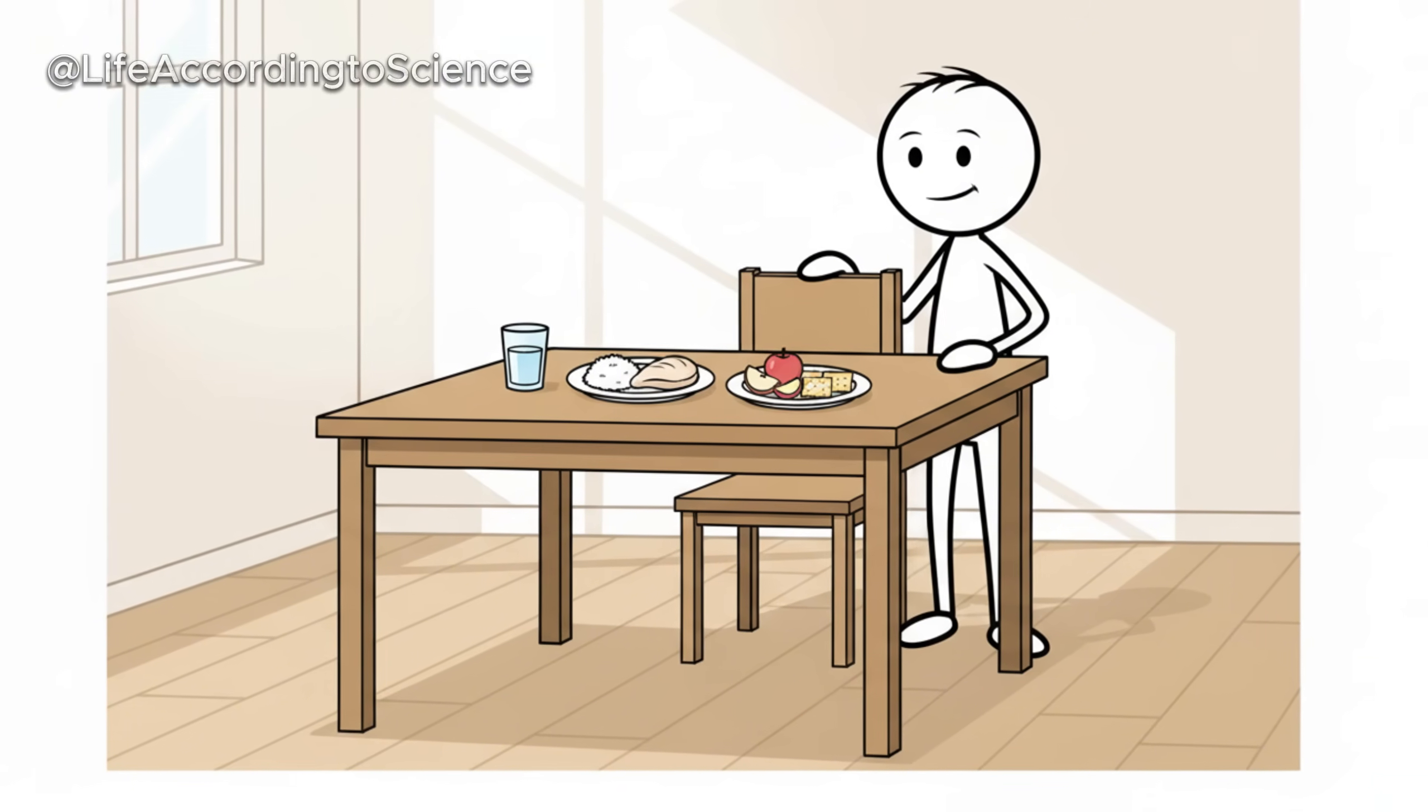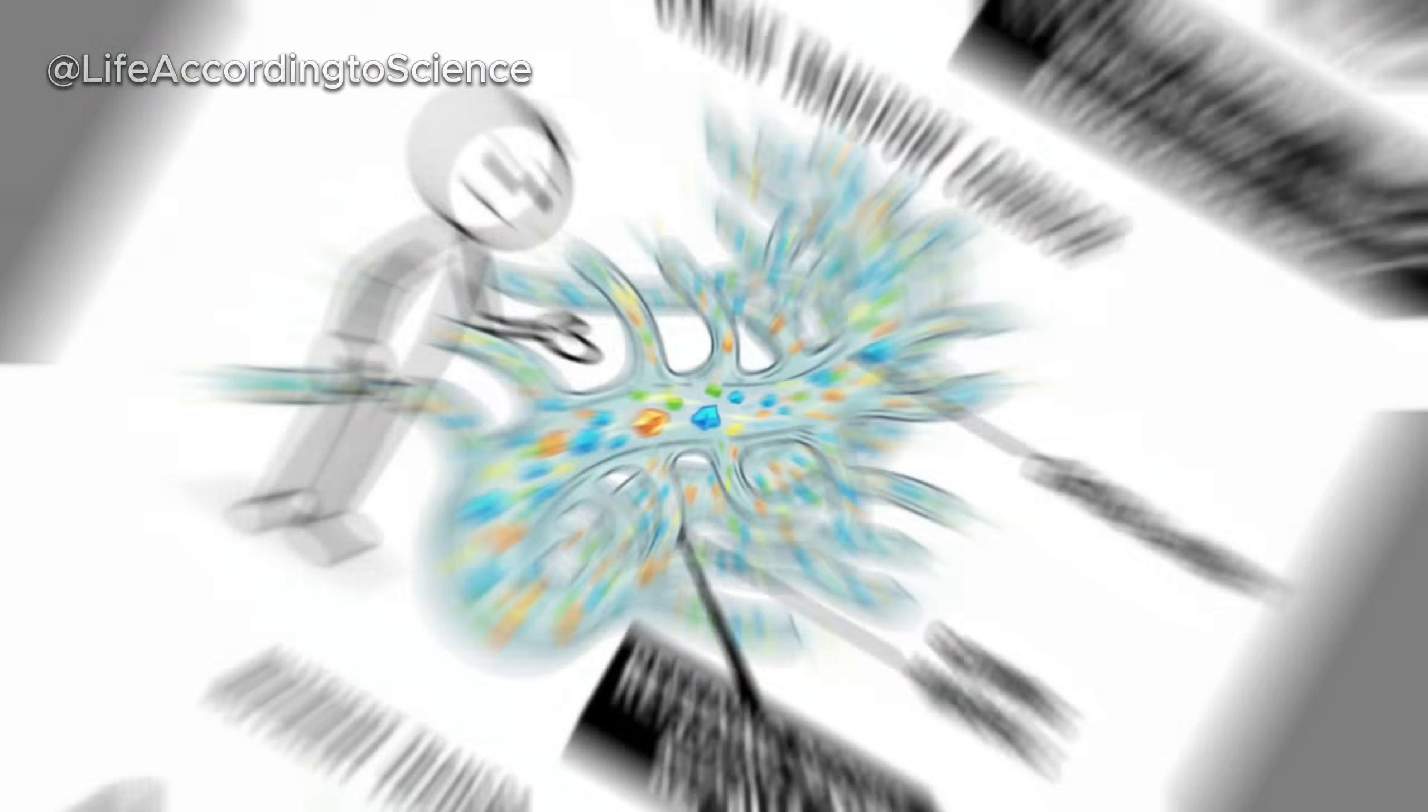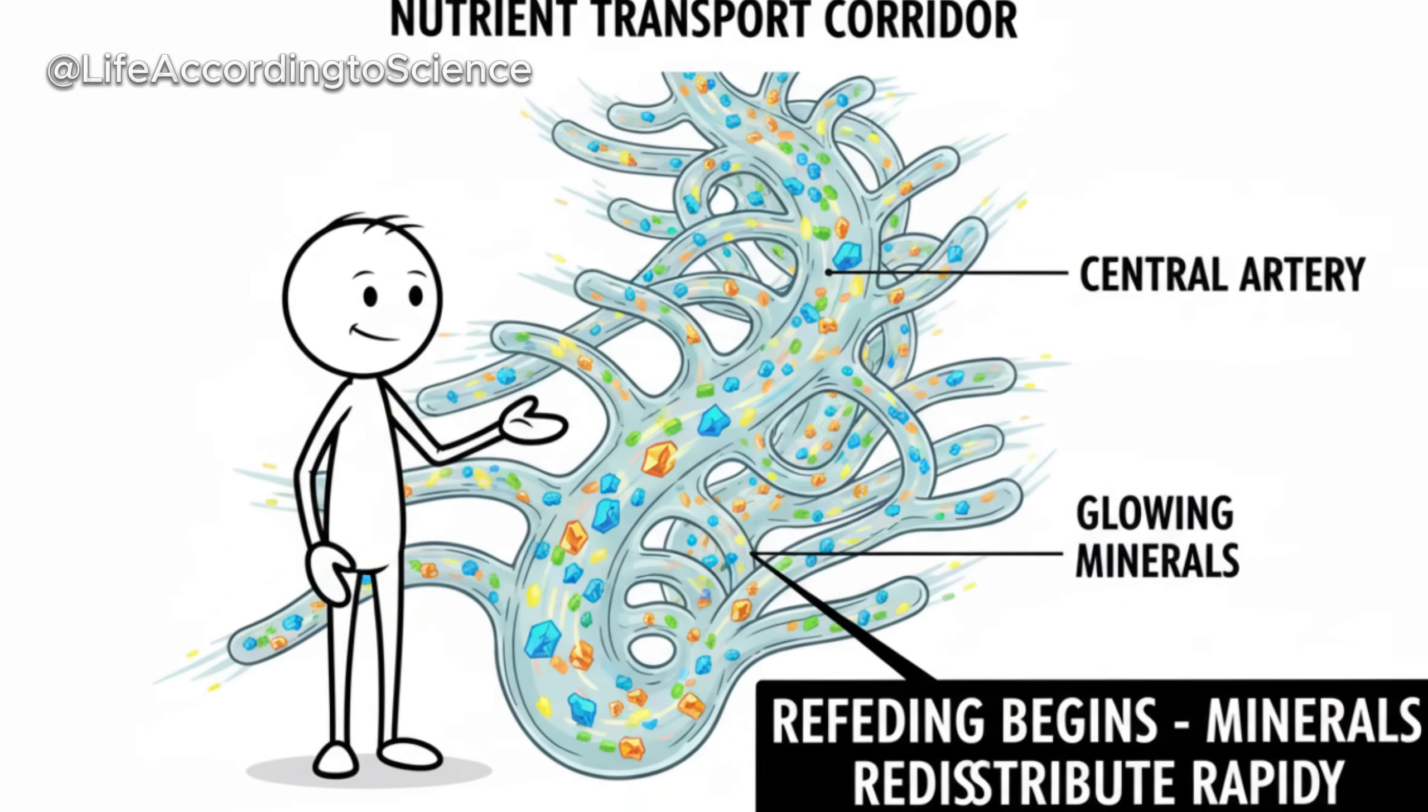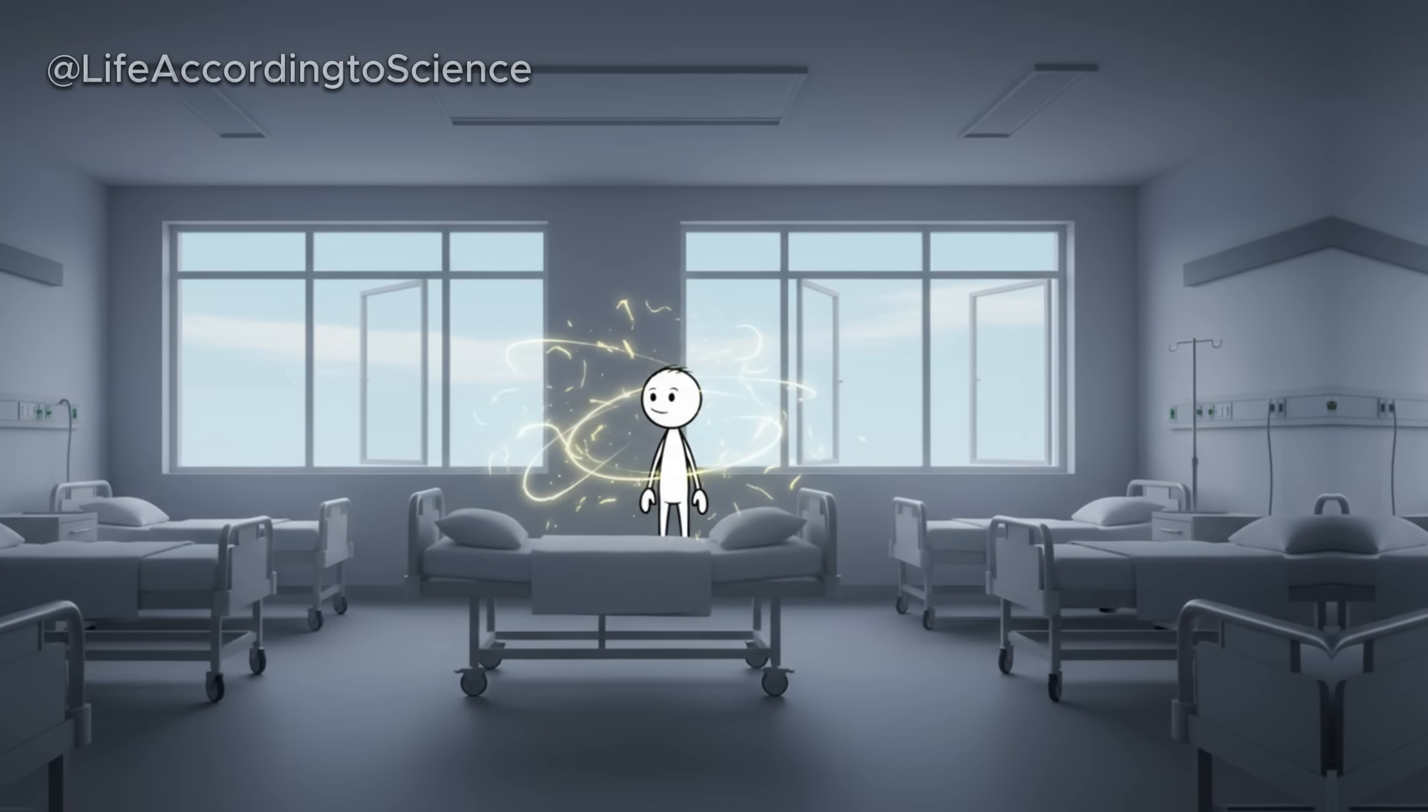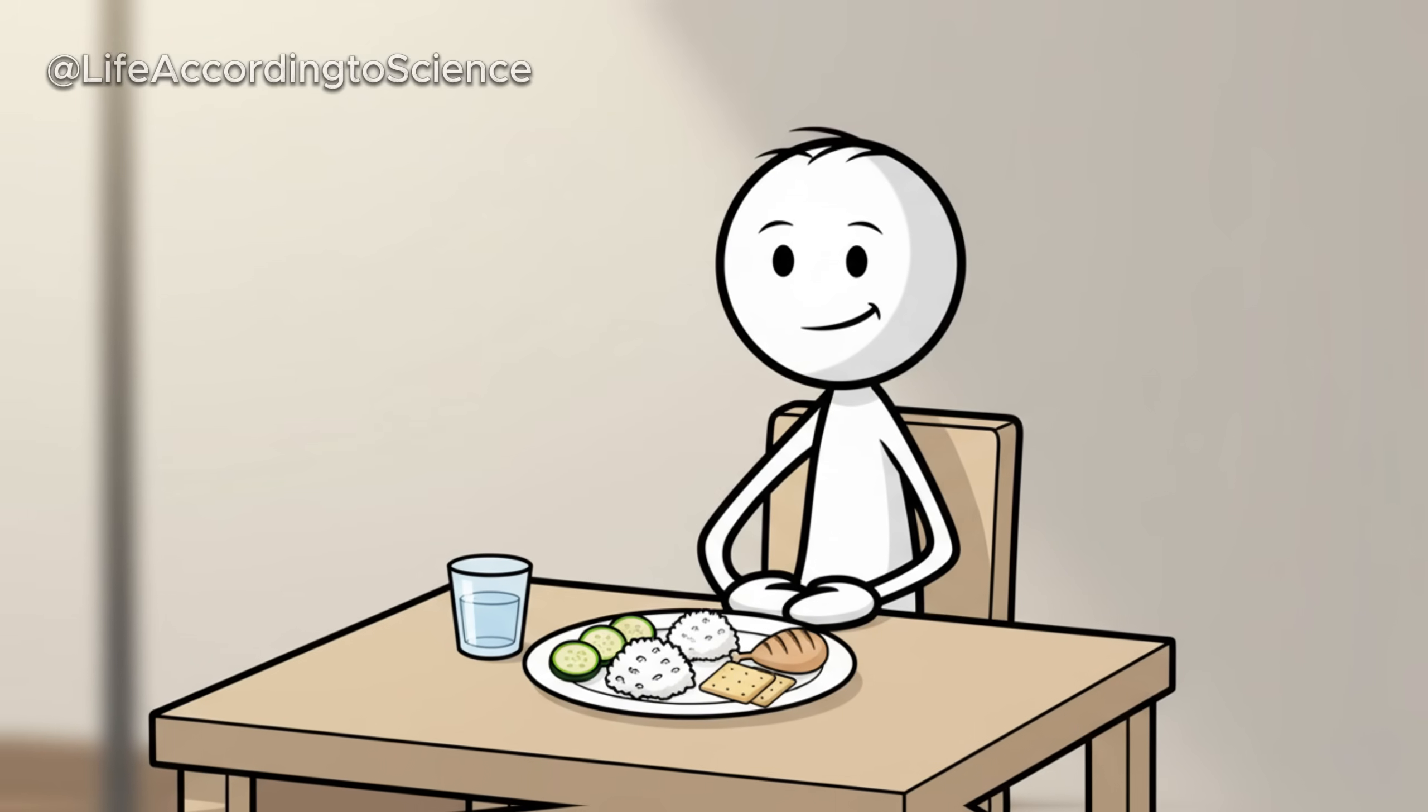After a long fast, eating again might seem like a relief, but this stage can be surprisingly dangerous if not handled correctly. The body, after being in energy conservation mode, suddenly receives a flood of glucose and nutrients. Insulin spikes, and cells rapidly absorb electrolytes like phosphate, potassium, and magnesium. This can lead to refeeding syndrome, a potentially life-threatening condition if the transition isn't gradual. Historically, refeeding syndrome was first observed during World War II when malnourished prisoners were suddenly given large amounts of food.